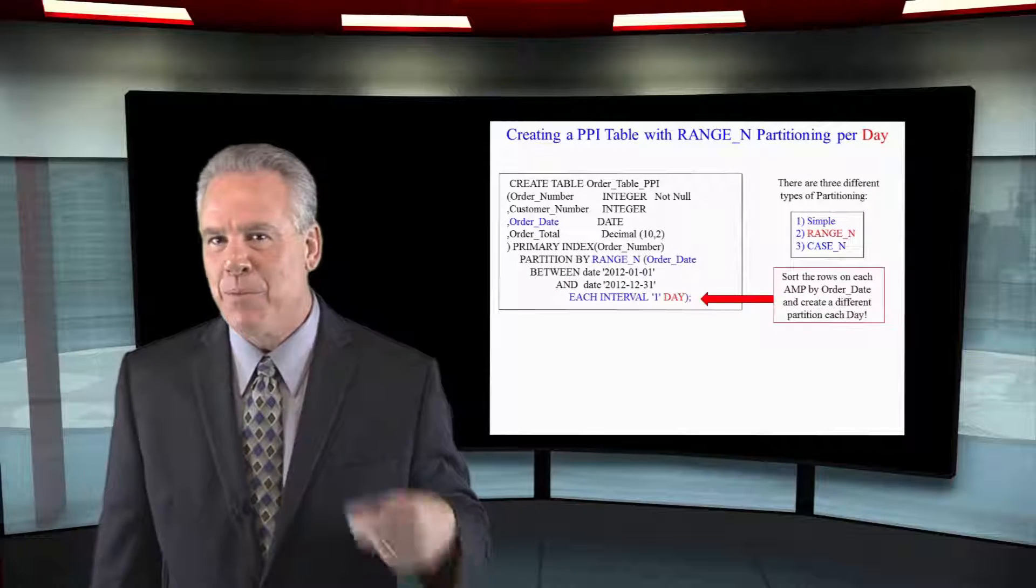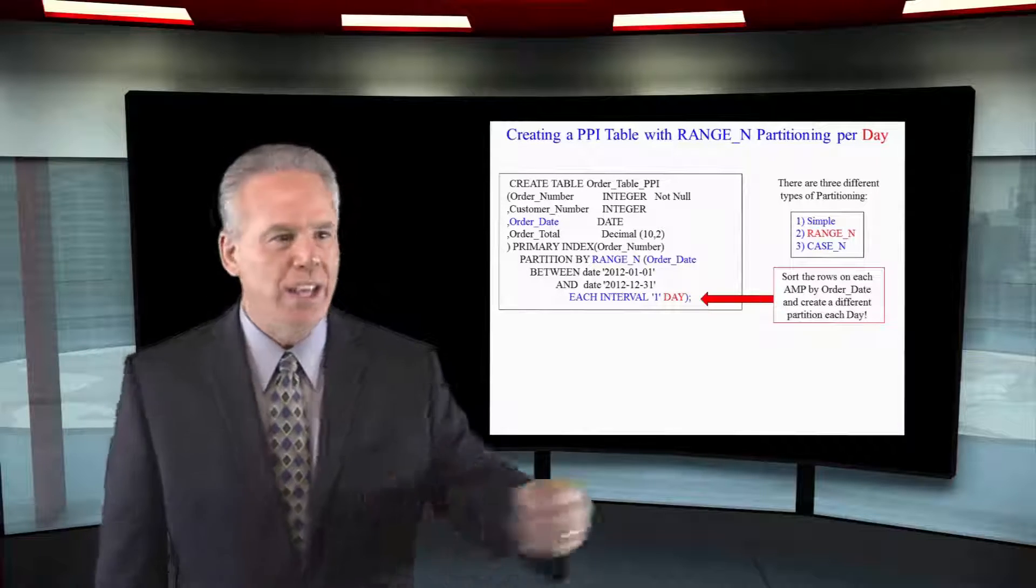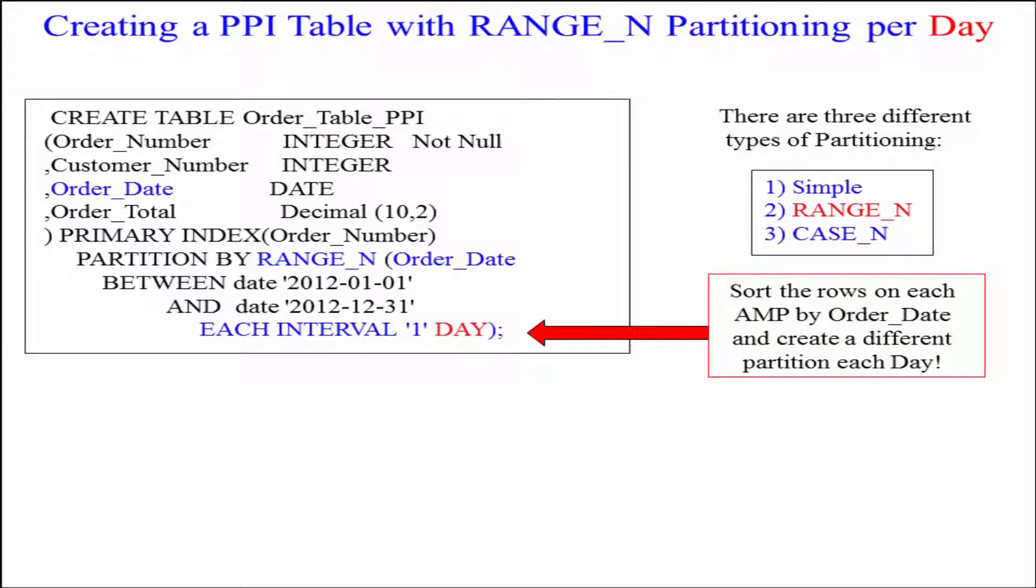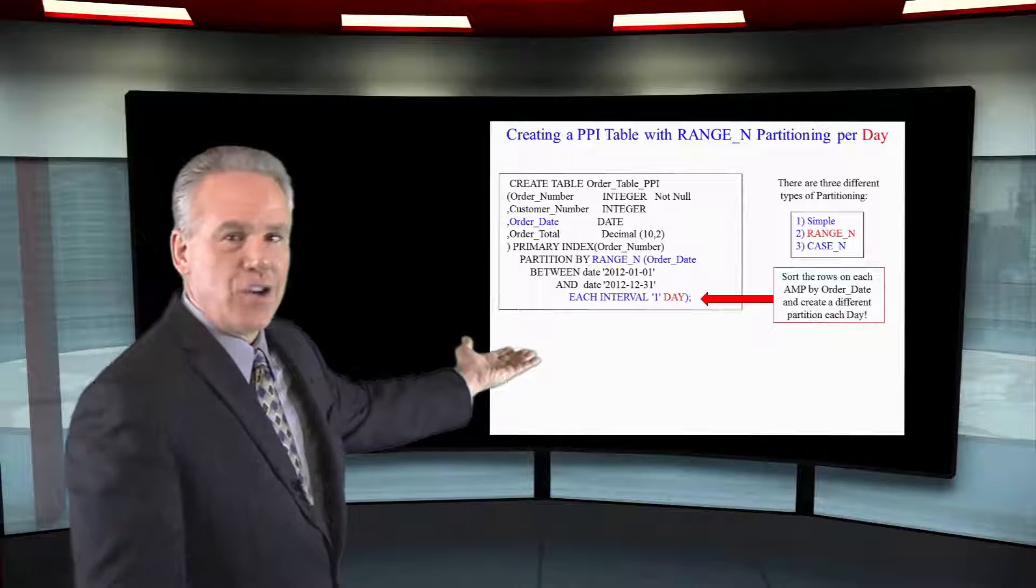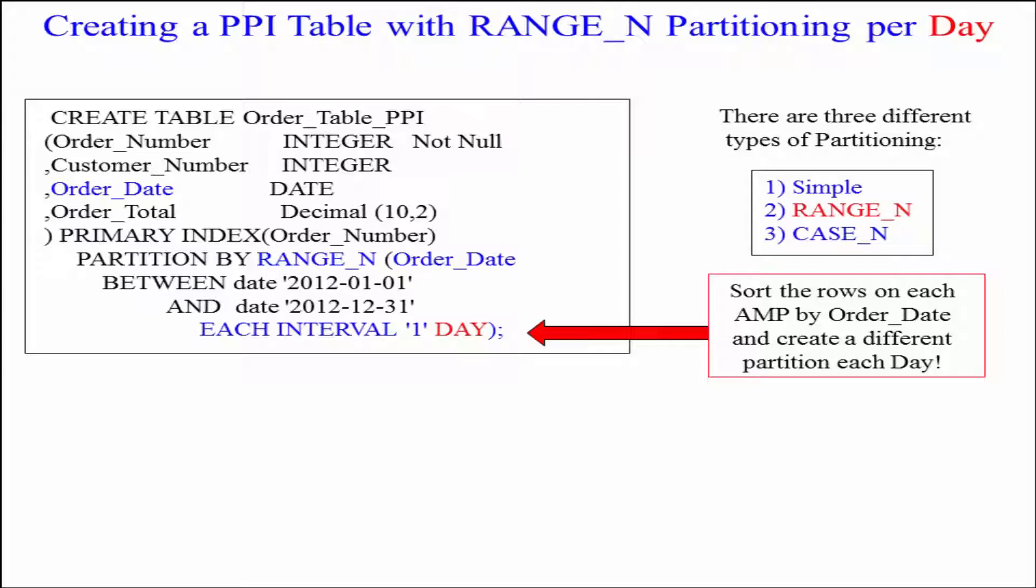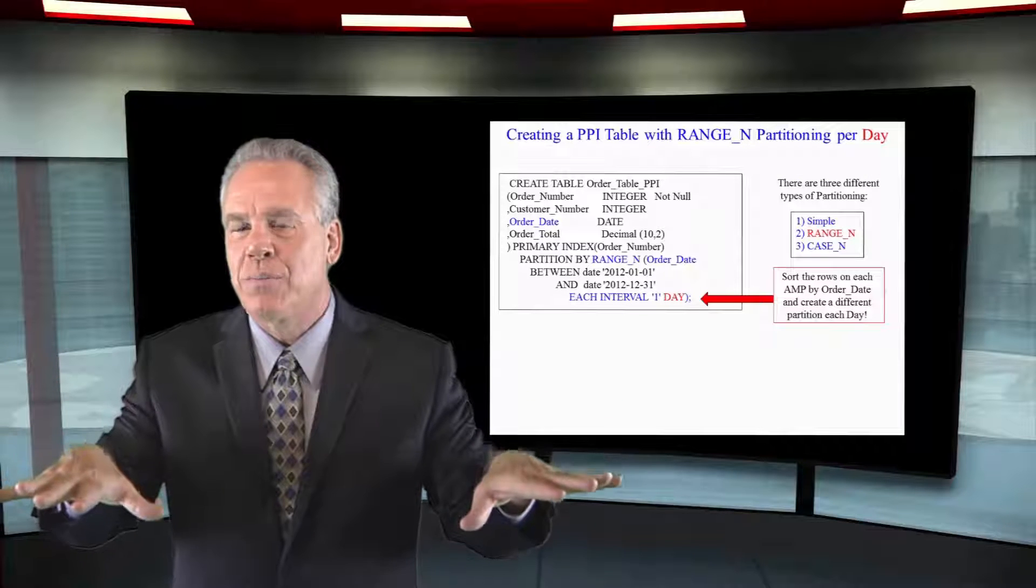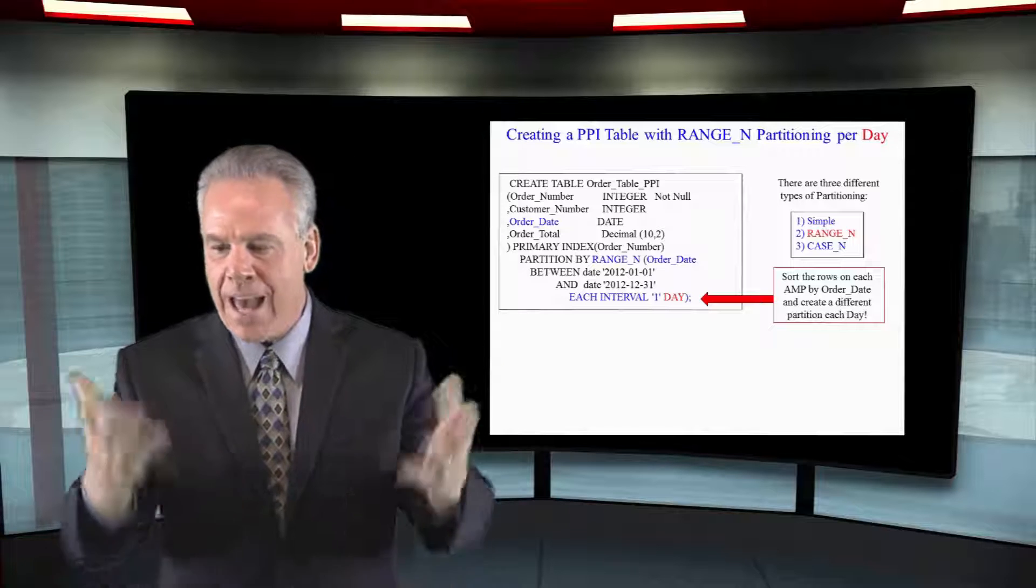Here's another PPI table, partitioned primary index, but this is a RANGE_N. So once again, we say here's the table name, here's all my columns. My primary index here is going to be order number, but I want you to partition this by a RANGE_N. I've got the date range between here and here of the data you're going to see, and I want each interval to be one day.